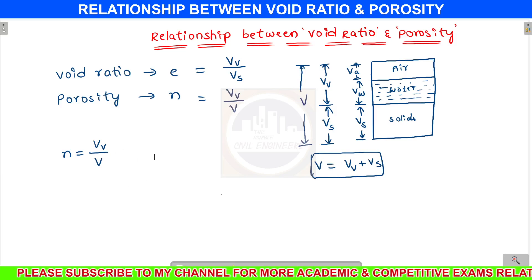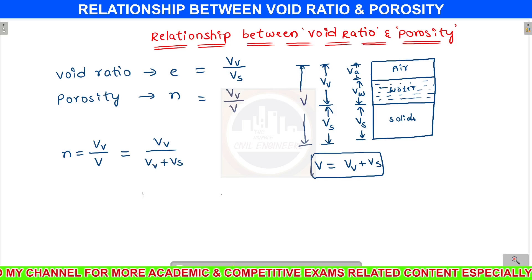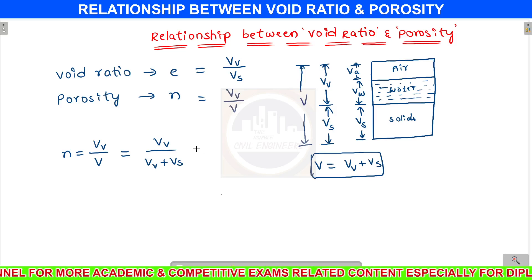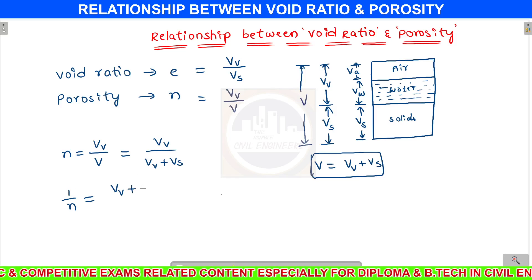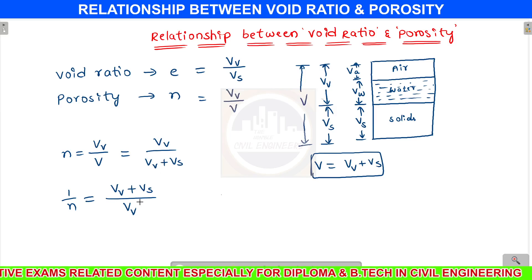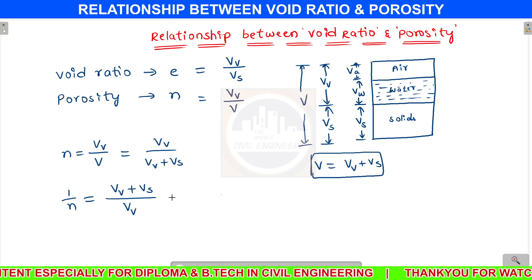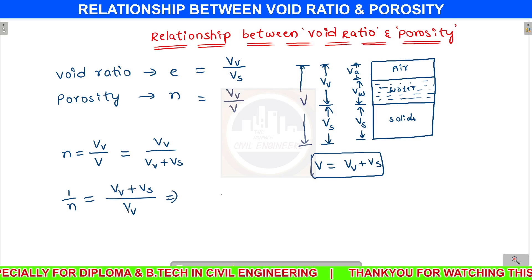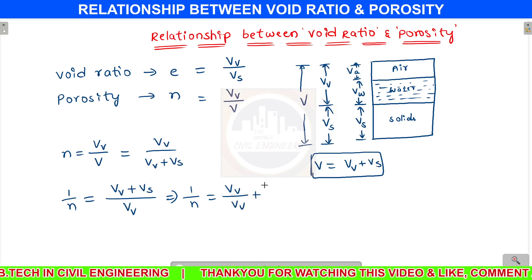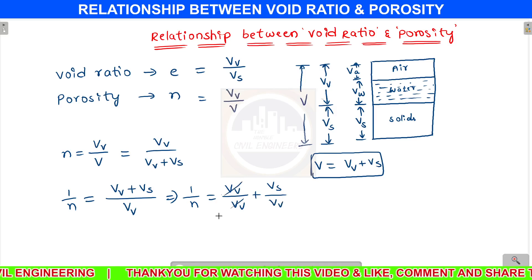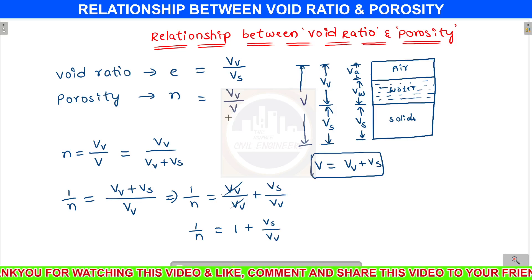So I will substitute: n equals volume of voids divided by (volume of voids plus volume of solids). I will then invert this equation, so 1/n equals (volume of voids plus volume of solids) divided by volume of voids. Separating the terms: 1/n equals Vv/Vv plus Vs/Vv, and Vv/Vv cancels, giving 1/n equals 1 plus Vs/Vv.